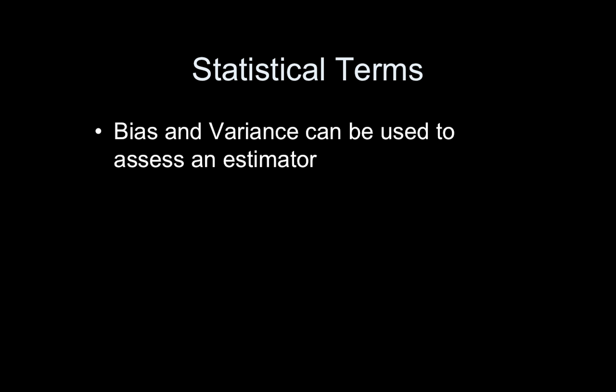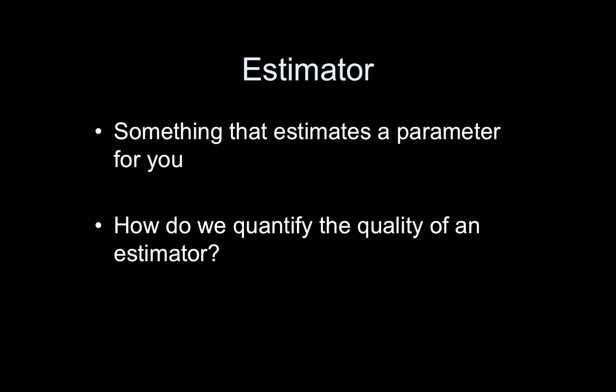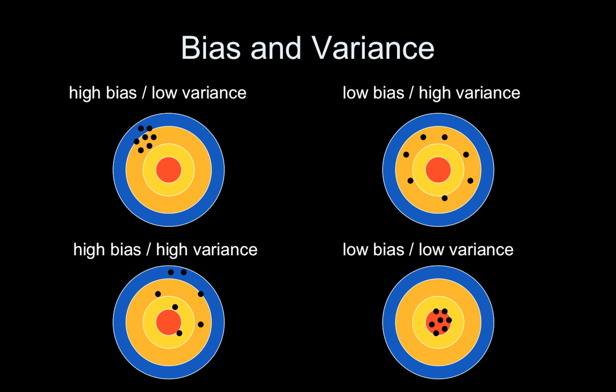And that's an estimator. So the terminology bias and variance, here variance has a slightly different meaning, can be used. Bias means that on average your estimate's correct, and variance has to do with the reliability of the estimate. And again, an estimator is something that estimates a parameter for you. So this is how we quantify the quality of our estimator.